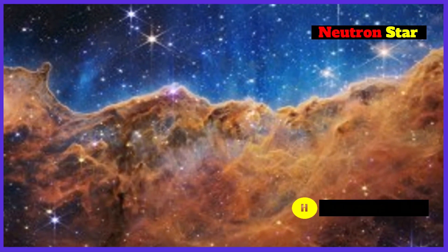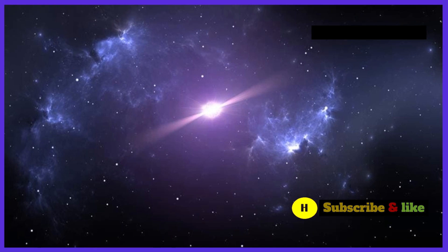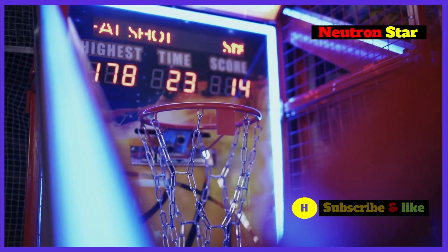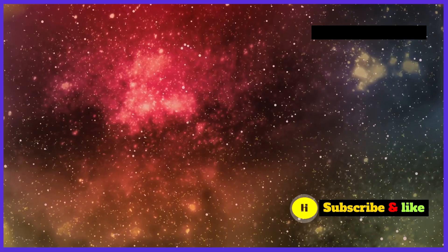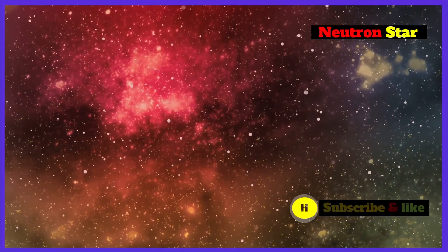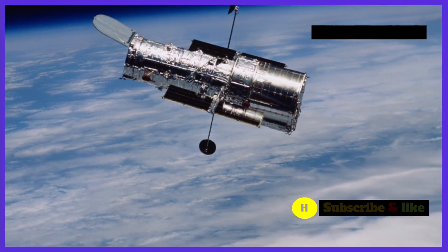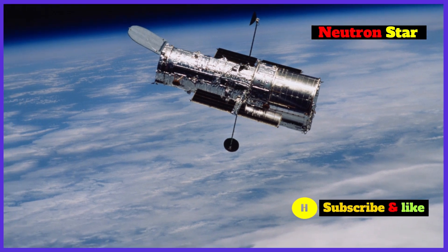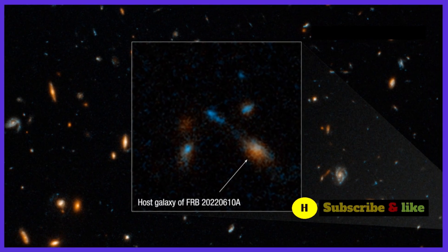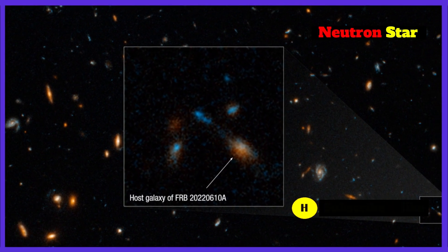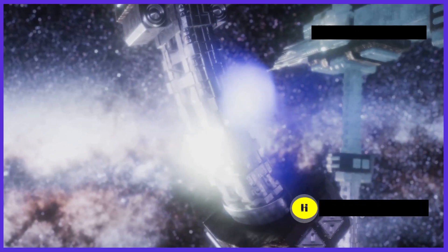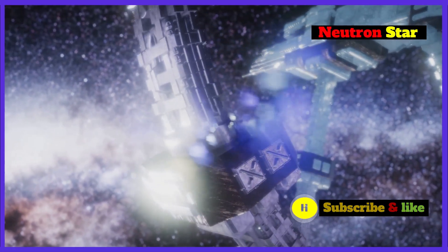FRBs are a puzzle for several reasons. First, they are incredibly short-lived. This makes them difficult to detect and study. We often miss them because they are gone before we even notice. Second, FRBs come from billions of light-years away. This means they originated in distant galaxies, making it difficult to pinpoint their exact source. Think of it like trying to find a firefly in another country.